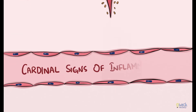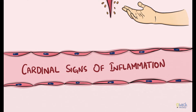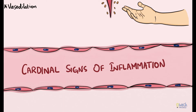There are five cardinal signs of inflammation which are a macro level or external manifestation of the microscopic events happening during inflammation. Inflammation kick-starts with vasodilation of arterioles and capillaries near the site of tissue insult, and this leads to rubor or redness.